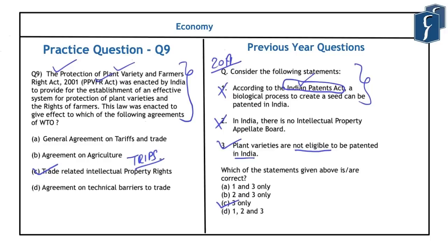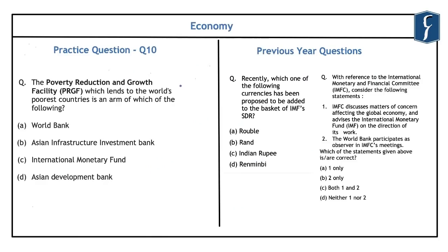The tenth and final question is related to international multilateral organizations. It reads: the Poverty Reduction and Growth Facility, which lends to the world's poorest countries, is an arm of which of the following? A previous 2016 question asked which currency was proposed to be added to the IMF's SDR basket — Renminbi was added in 2016, making it the correct answer. Another 2016 question on the International Monetary and Financial Committee confirmed both that IMFC advises IMF on its direction and that the World Bank participates as observer in IMFC meetings — answer C, both 1 and 2.